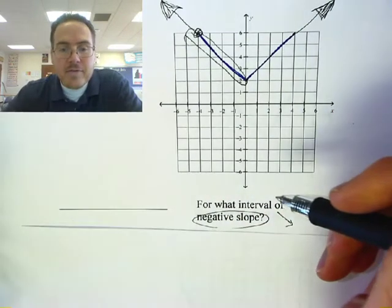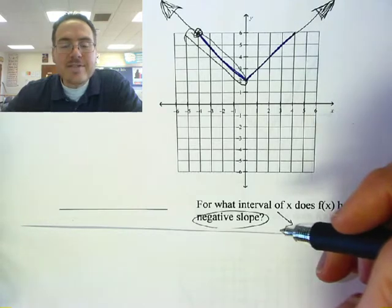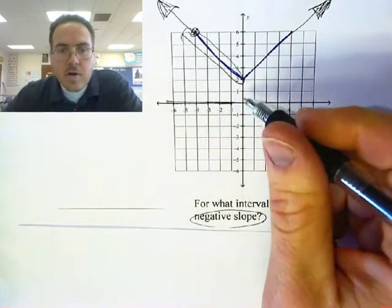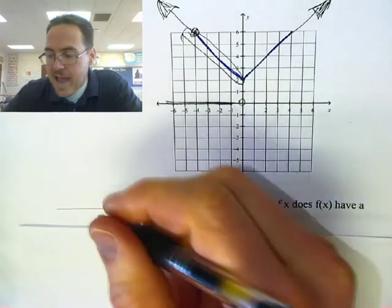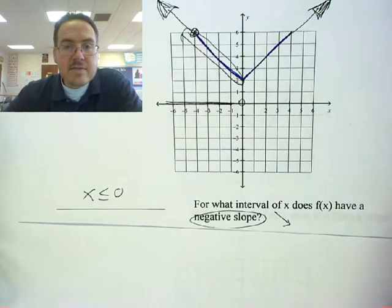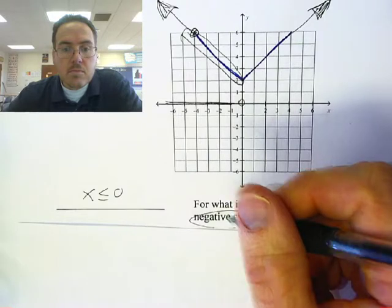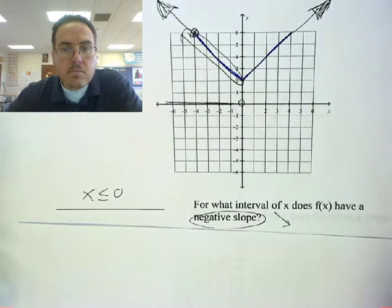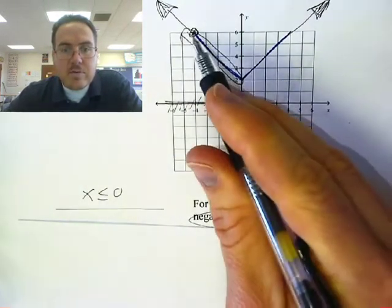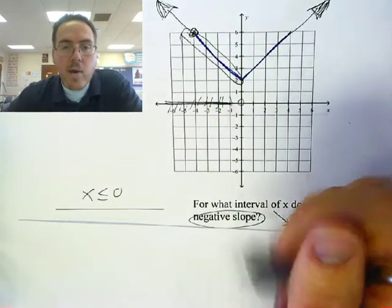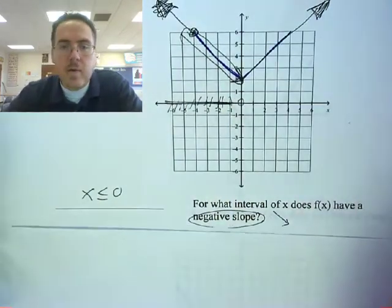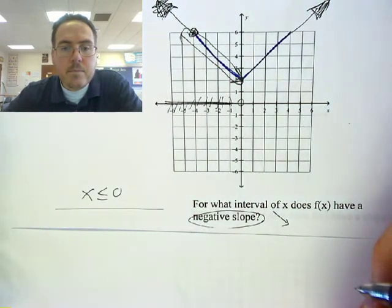So what part of this graph shows a negative slope? Where is it going down, where is it decreasing? It starts going up at zero, so as long as the x values are less than or equal to zero, the line has a negative slope. These are all the x values here — this is where it's decreasing, so that's the part of the graph I'm being told to look at. We always go left to right.